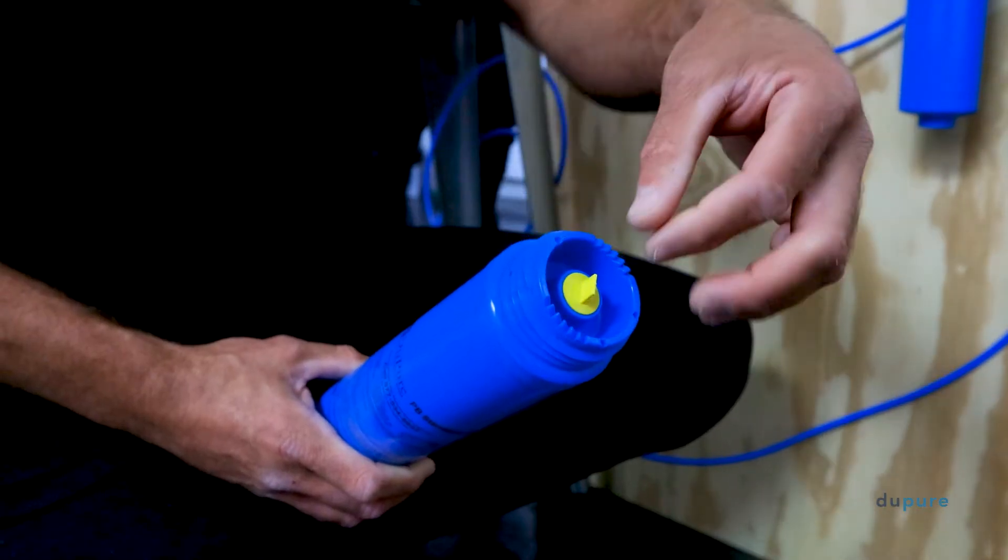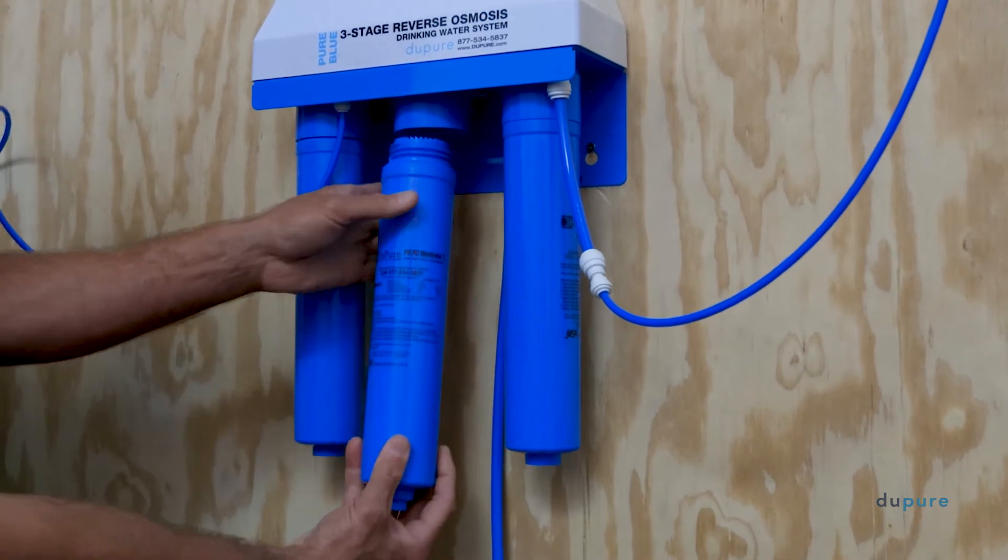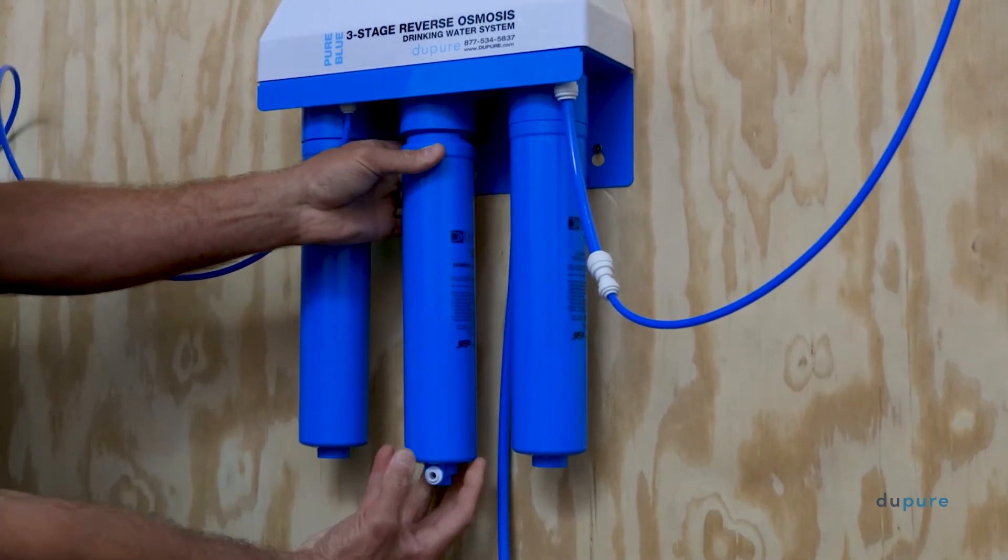Now, it's time to install the new membrane. Place the new membrane in the slot and tighten counterclockwise until it is hand tight.